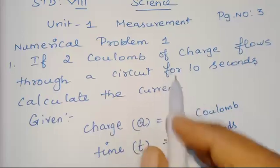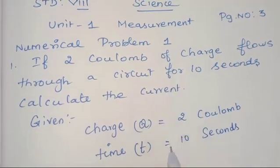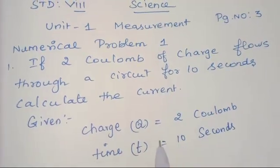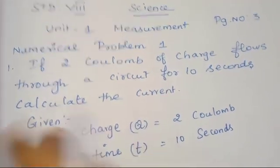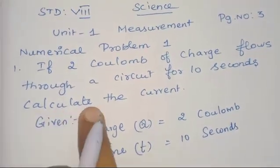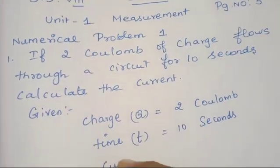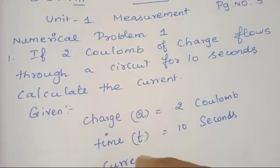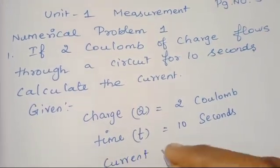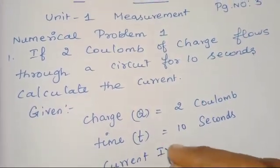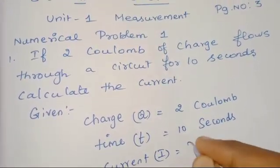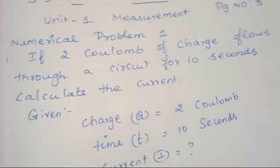The 2 values alone are given in the question. Next, we have to calculate the current, so current will be the question mark. The symbol of current is I, equal to question mark.